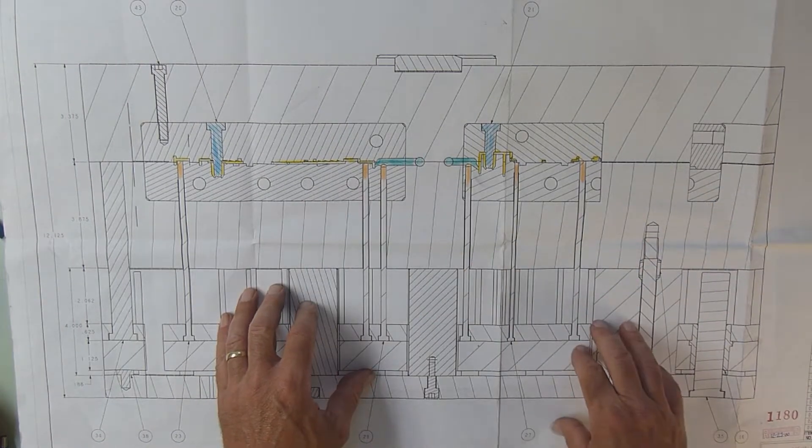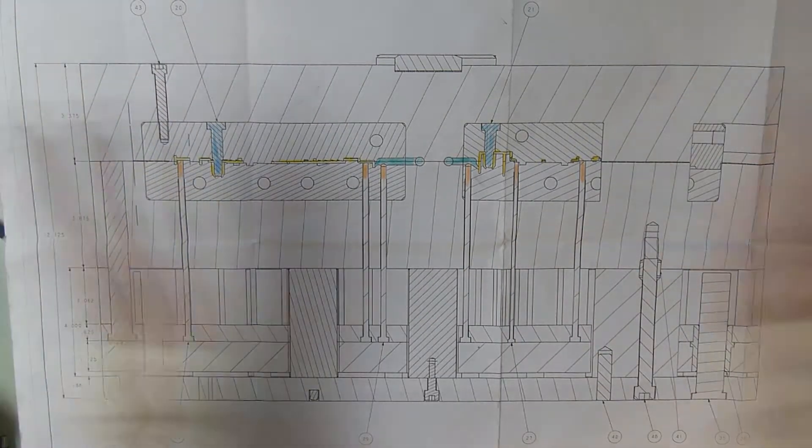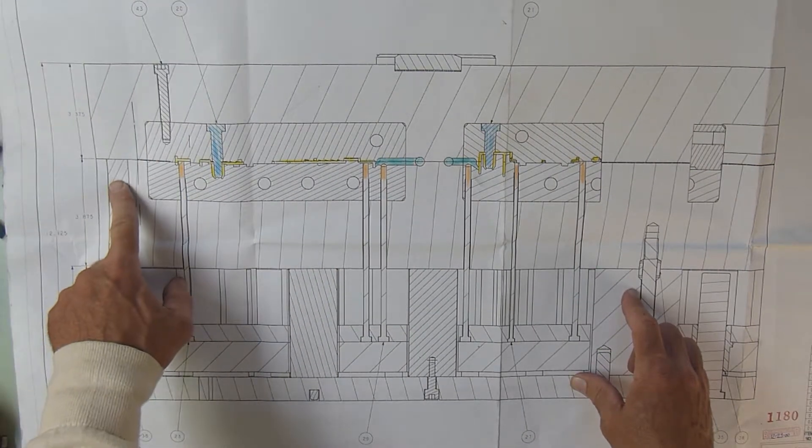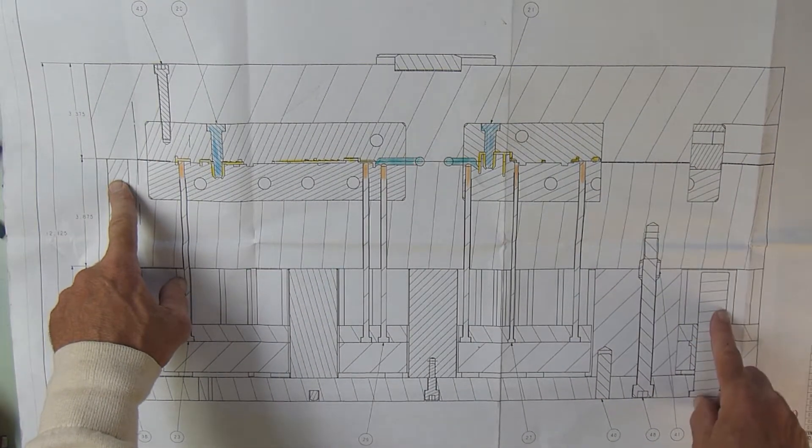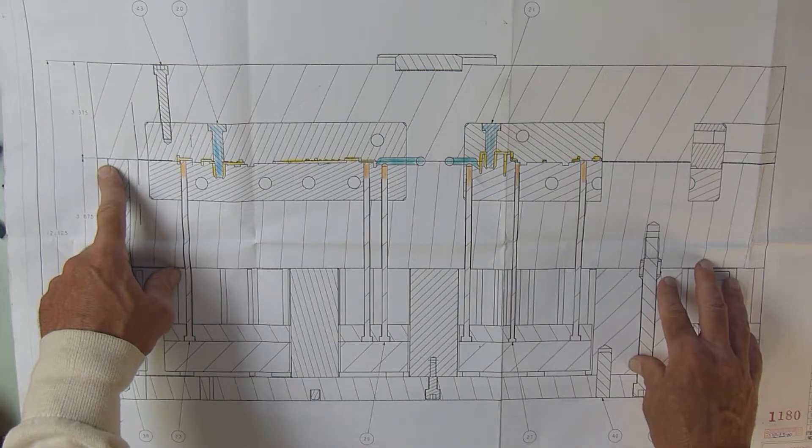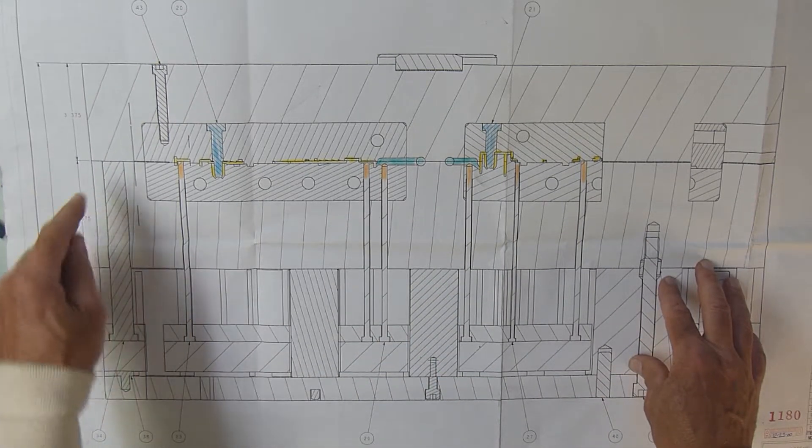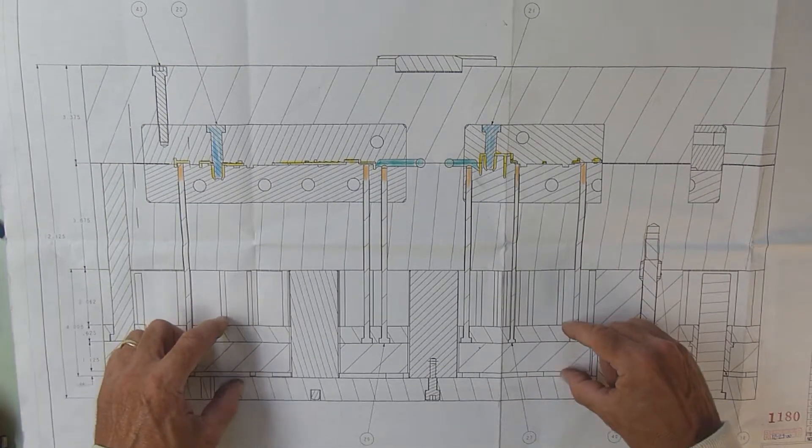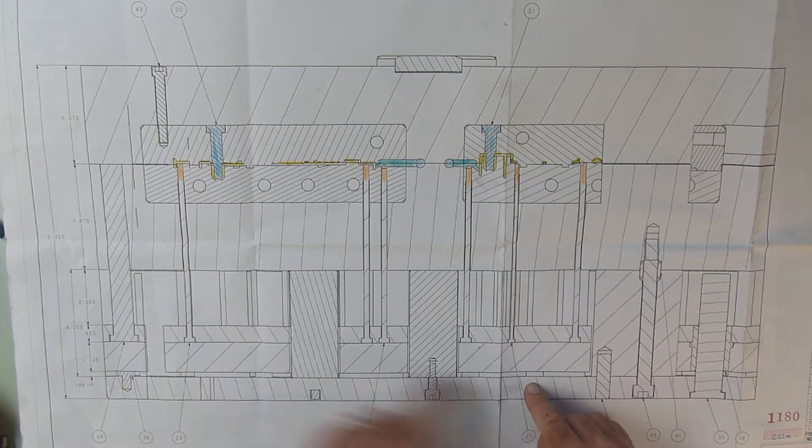So when the mold is shut, this half is going to hit these pins. You can't see them on this side because of the way the ejector section's cut—there's four return pins, they're usually almost always three-quarter diameter. It's going to push these plates back. These plates are back now against these rest buttons.